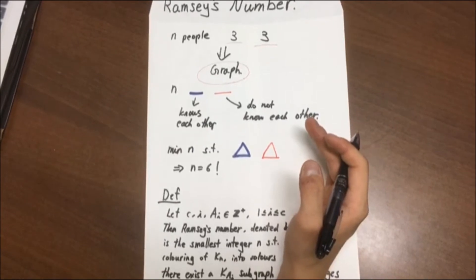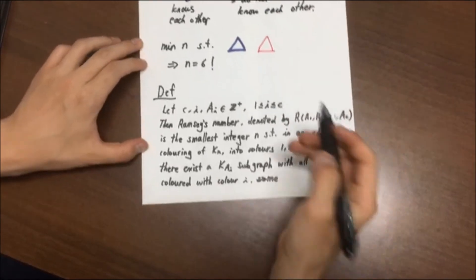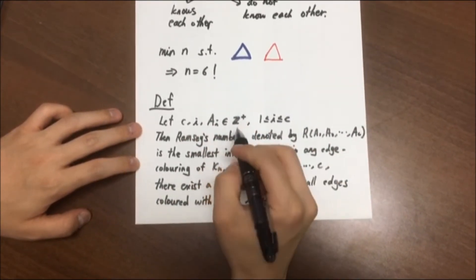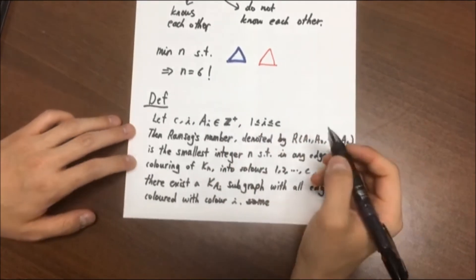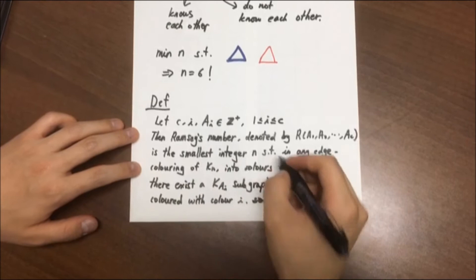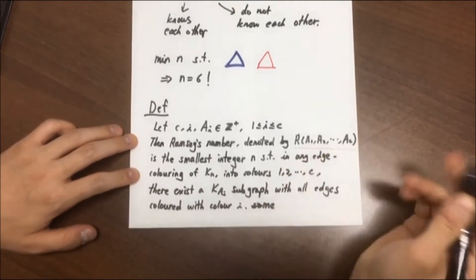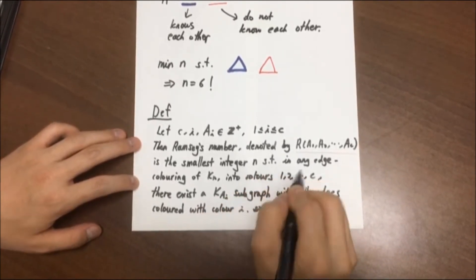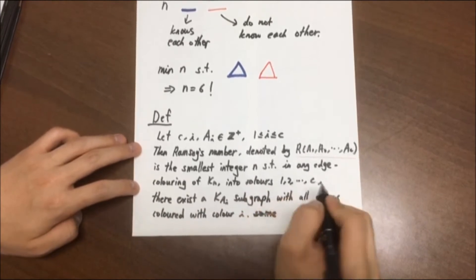Before we go further on, let me give you a generalized definition of Ramsey's number. So, let C_I and A_I be positive integers where I is from 1 to C. Then, Ramsey's number, denoted by R(A_1, A_2, ..., A_C) is the smallest integer N such that in any edge coloring of K_N into colors 1 to C,